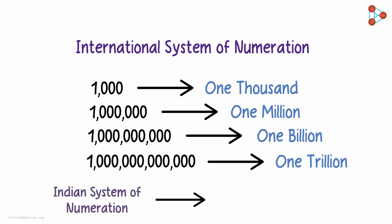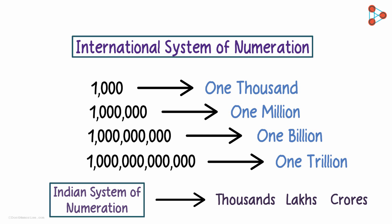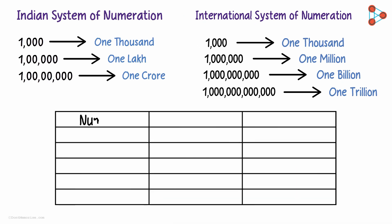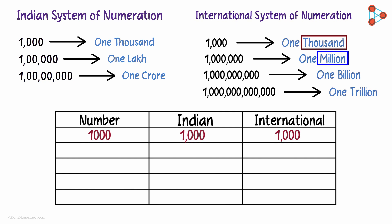Like the Indian system talks in terms of thousands, lakhs, and crores, the international system talks in terms of thousands, millions, and billions. The best way to understand both systems is by comparing them. Here's the first number — it's 1,000, and it's written in the same way in both the Indian as well as international systems. Both systems start off with thousands. In the Indian system it's thousands, lakhs, and crores; and in the international system it's thousands, millions, and billions.